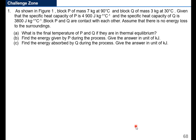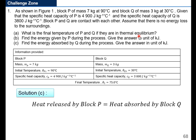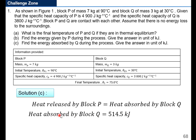Last part: find the energy absorbed by Q during the process. Remember from part (a), we found the final temperature assuming thermal equilibrium. Thermal equilibrium means heat released by Block P equals heat absorbed by Block Q. So heat absorbed by Block Q equals heat released by Block P, which is 514.5 kJ.